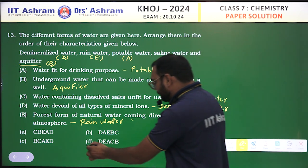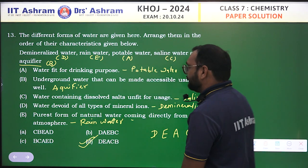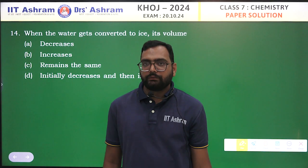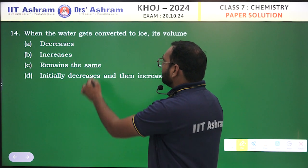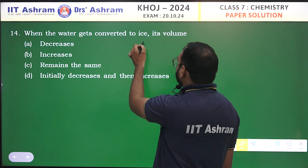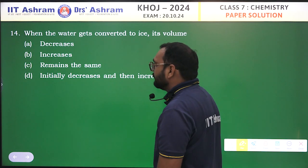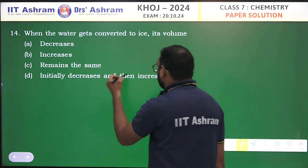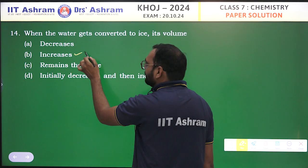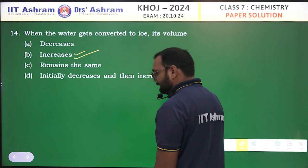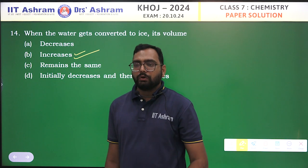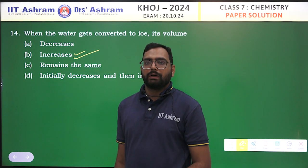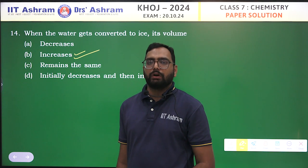Let's see question number 14. When water gets converted to ice, its volume — increases, decreases, remains the same, or initially decreases then increases? Option D is the correct answer: volume increases, which means density decreases, and that's why ice floats on water.